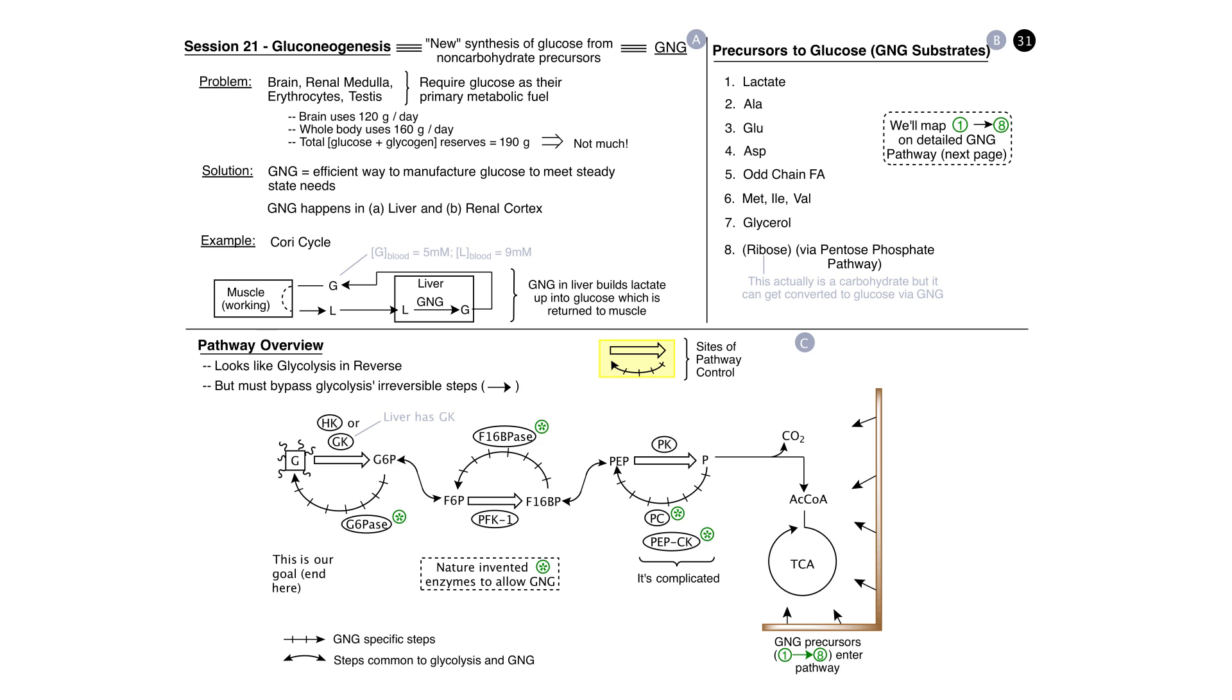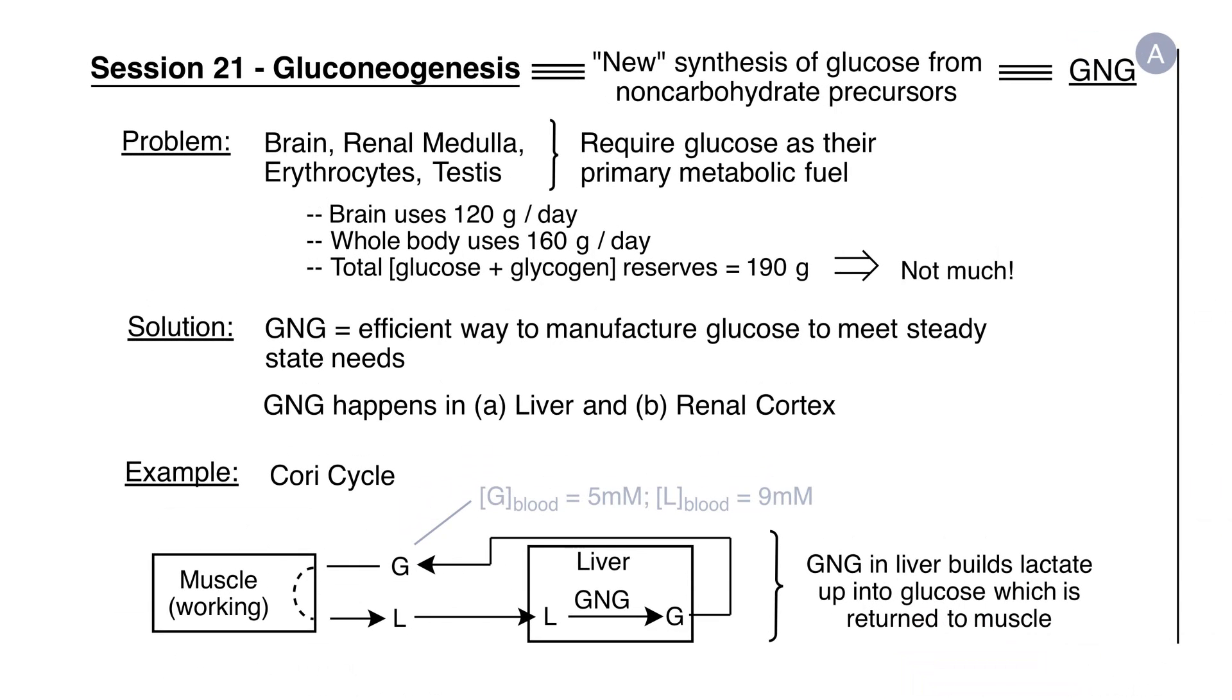The second carbohydrate-based synthetic pathway we're going to look at is called gluconeogenesis. Gluconeogenesis is the synthesis of glucose from non-carbohydrate precursors. Let's look at panel A of storyboard 31. There are some organs in the body that require glucose as their metabolic fuel, yet they don't have the capacity to make it or to make much of it.